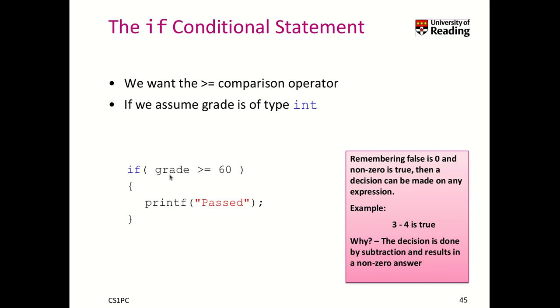Remember, like I said, that false is zero and any non-zero value is evaluated to be true. So if you subtract 4 from 3, you get the value minus 1, and this is actually not zero, so the value is true.